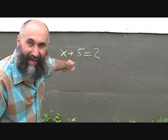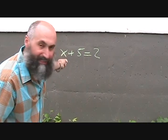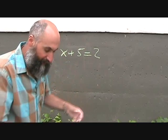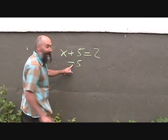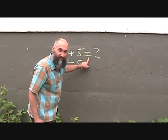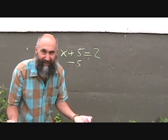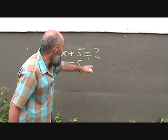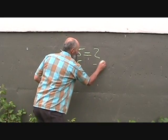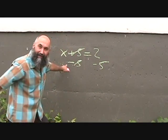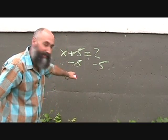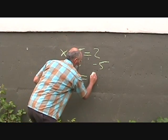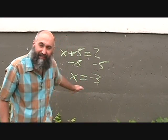So we have x plus 5 is equal to 2. We want to get x by itself, so we have to get rid of the 5. That's plus 5, so we're going to subtract 5 — minus 5 on this side. And because we have an equal sign, whatever we do on one side we've got to do to the other side, so we subtract 5 from the other side as well. The plus 5 and minus 5 cancel out, and all we've got left is x. So x equals 2 minus 5, which is negative 3. x is equal to negative 3.